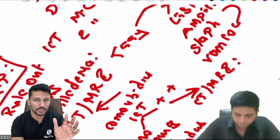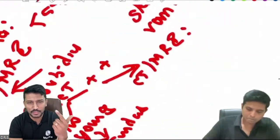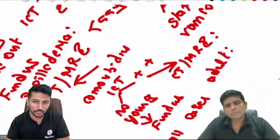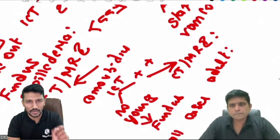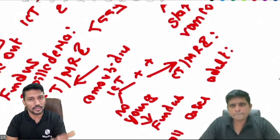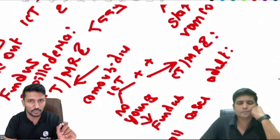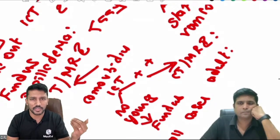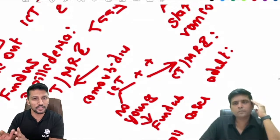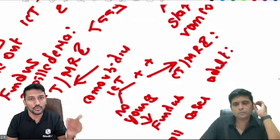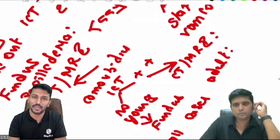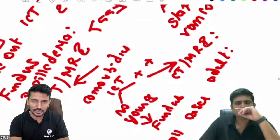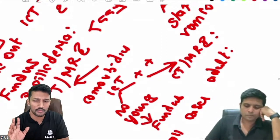Every hour of delay in initiating antibiotics contributes to mortality and morbidity. If lumbar puncture will take time, start empirical antibiotics immediately without waiting. Duration of antibiotics in adult practice: generally 7 to 14 days; after 7 days, repeat lumbar puncture to confirm CSF sterility. If CSF is sterile and abnormalities have resolved, stop antibiotics. If not, continue for 7 more days. Normal CSF must be documented before stopping treatment.